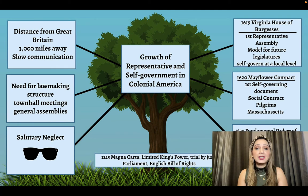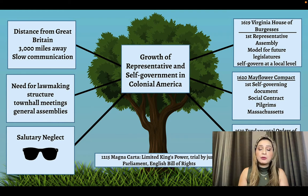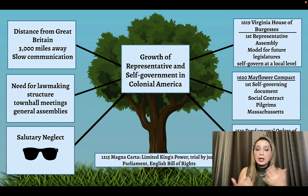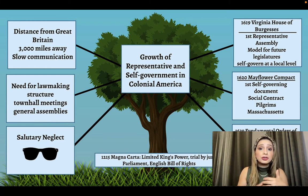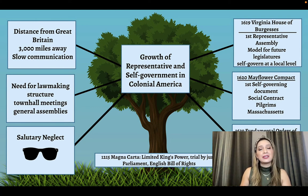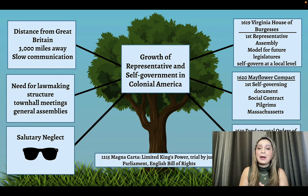As the colonies continued to grow, they started to develop a self-government — a growth of representative and self-government. The causes that led to that growth include the distance from Great Britain — they're 3,000 miles away — slow communication, and the need to make rules and laws in town meetings. Finally, because the King was practicing something called salutary neglect, he was ignoring them, and they were happy about that. That growth slowly started happening in the 13 colonies.